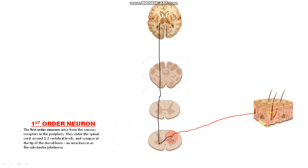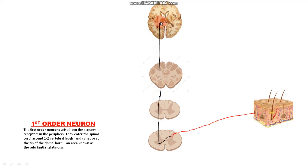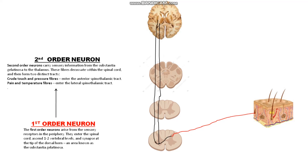If the sensory signal is of crude touch or pressure, the second order neuron ascends in the anterior side of the spinal cord. If the sensory signal of crude touch or pressure is coming from the first order neuron, then the second order neuron ascends in the anterior side of the spinal cord and then synapses in the thalamus of the brain with the third order neuron.